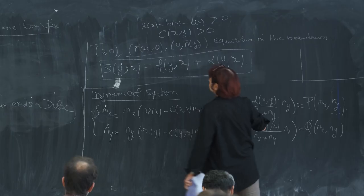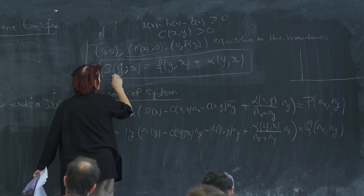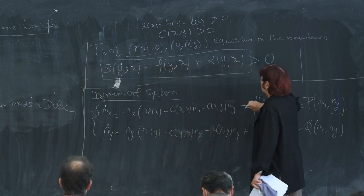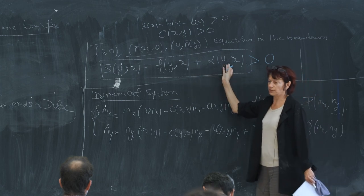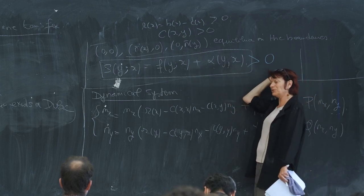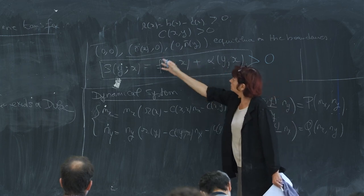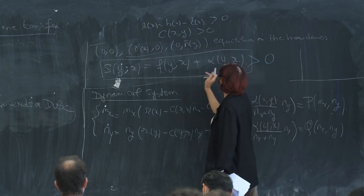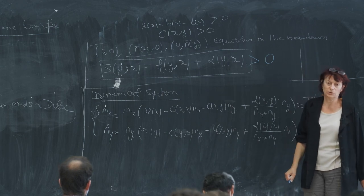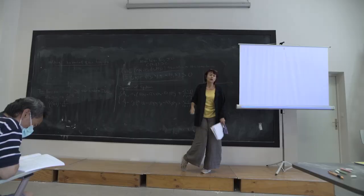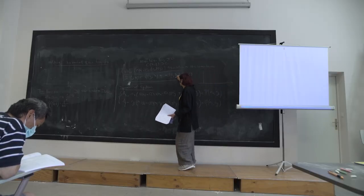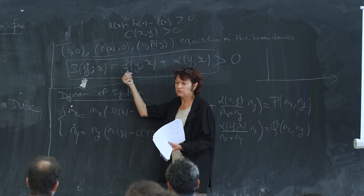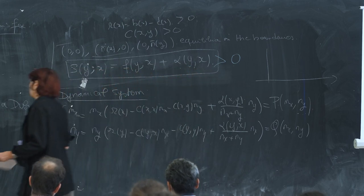We begin to see the trade-off: f has a sign and α has a sign. To allow y to invade the resident population with trait x we need this quantity to be positive. It can be positive because both terms are positive, or because the usual invasion fitness is negative but α is sufficiently large and positive. So if α is large enough, a demographically deleterious individual could invade the population.